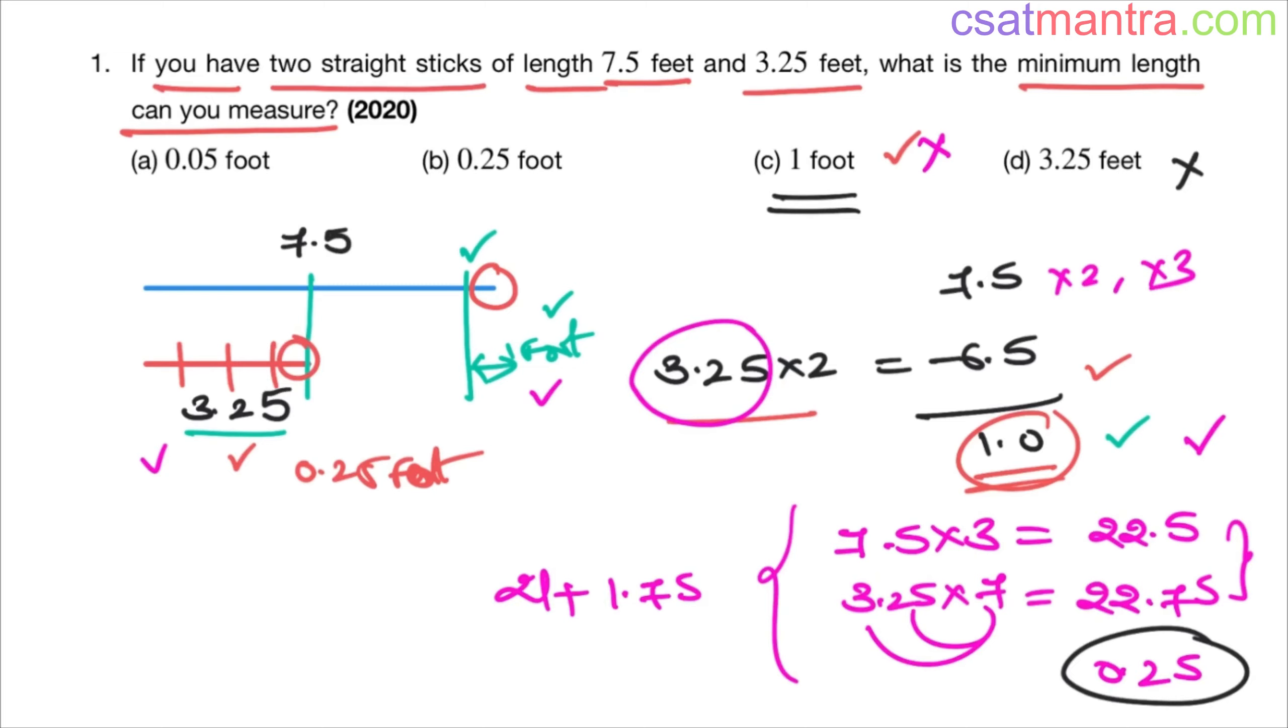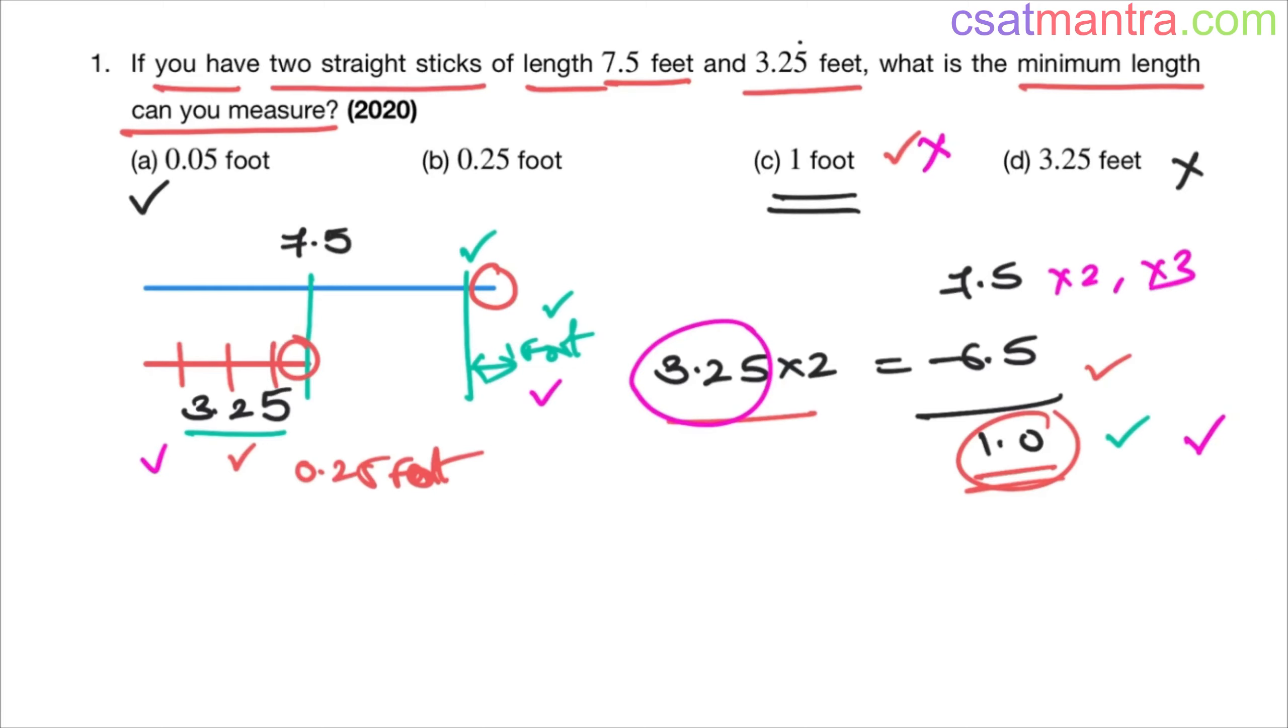Now what about option a? Now see, 0.25 multiples, it will be either 0.25, 0.5, 0.75, or 0.25 into 4 that is 1. So 0 or 0.5 multiples: 0.5 into 1 that is 0.5, and 0.5 into 2 that is 1.